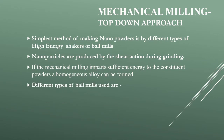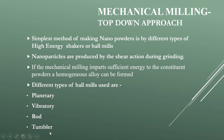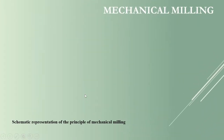Different types of ball mills are used for preparing nanocrystalline powders. Some of them are planetary, vibratory, rod, and tumbler mills. Let us see a schematic representation of the principle of mechanical milling.